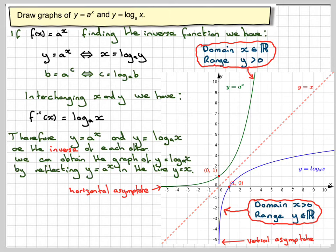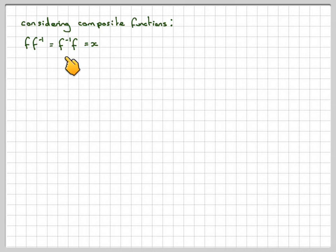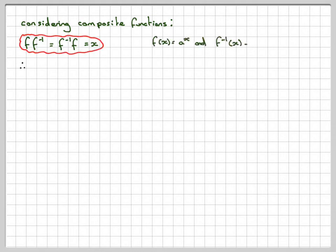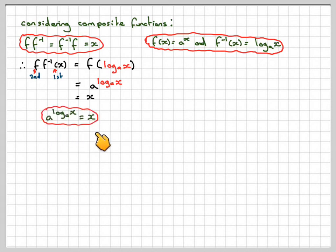These graphs you should learn how to just sketch, along with some of their main properties. Carrying on, if we're considering the composite functions — f of f to the minus 1 equals f to the minus 1 of f equals x — that is true for any function and its inverse. So considering f of x equals a to the x and its inverse log a of x, doing f of f to the minus 1 of x means we put log base a of x into f, giving us a to the log a of x, and we know that equals x. So the expression a to the log a of x equals x is quite an important one.